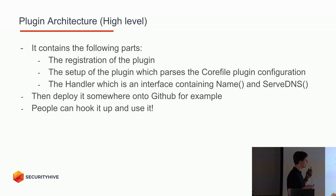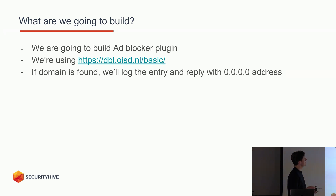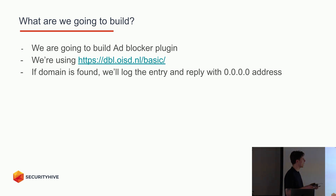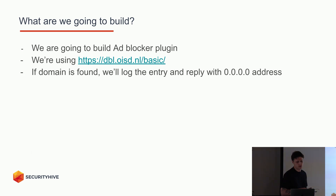Once you have these three parts configured you can just deploy it somewhere and people can hook it up with their CoreDNS configuration and start using it. So what are we going to build? We're going to build an ad blocker — a really simple one. I'm using the oisd.nl file which contains ad and tracker domains, just a small text file with all the domains listed. If we find a domain in that list, we're going to log the entry and modify the reply to return 0.0.0.0 so that it's not resolvable in the browser.